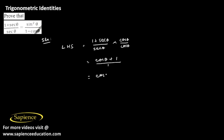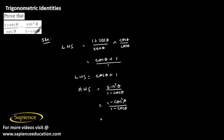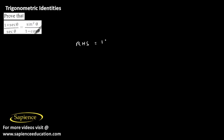So the left hand side becomes cos theta plus 1. Now we will simplify the right hand side. The right hand side is sin square theta divided by 1 minus cos theta. Now sin square theta can also be written as 1 minus cos square theta, divided by 1 minus cos theta. Since 1 minus cos square theta is of the form a square minus b square, we can rewrite it as 1 plus cos theta into 1 minus cos theta, divided by 1 minus cos theta. We can cancel 1 minus cos theta, so the right hand side equals 1 plus cos theta.